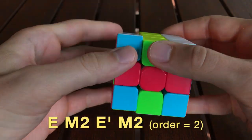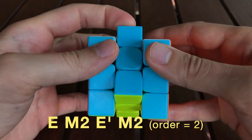In order to undo this, just repeat the same algorithm again. That means this algorithm has order two.